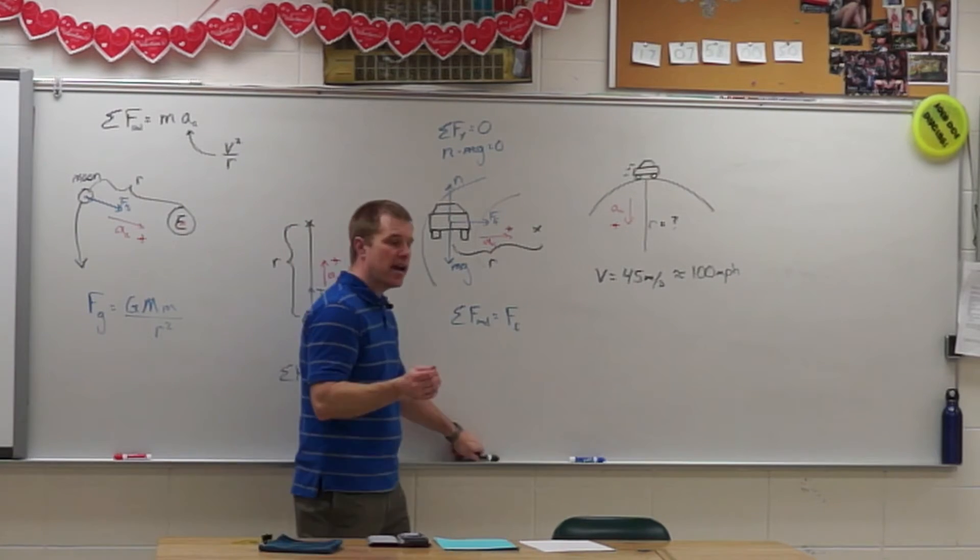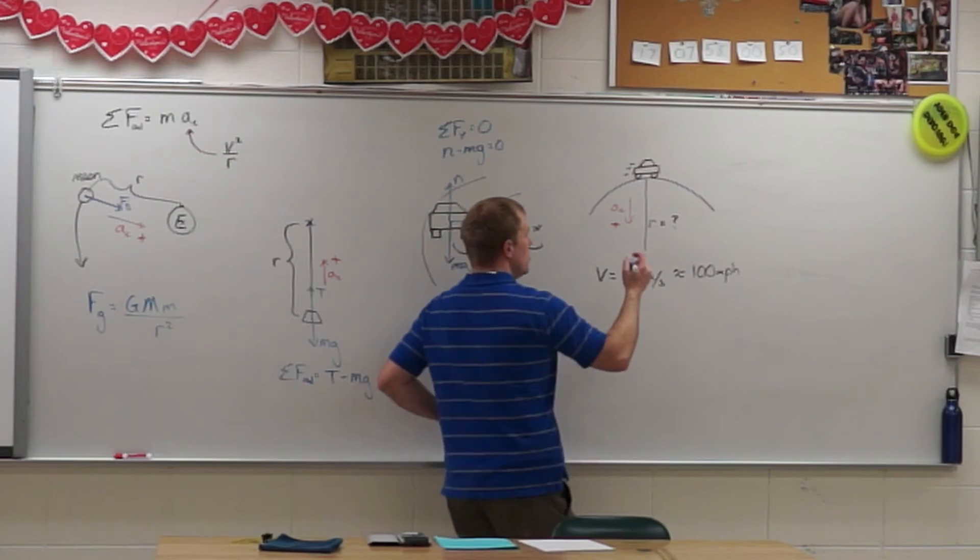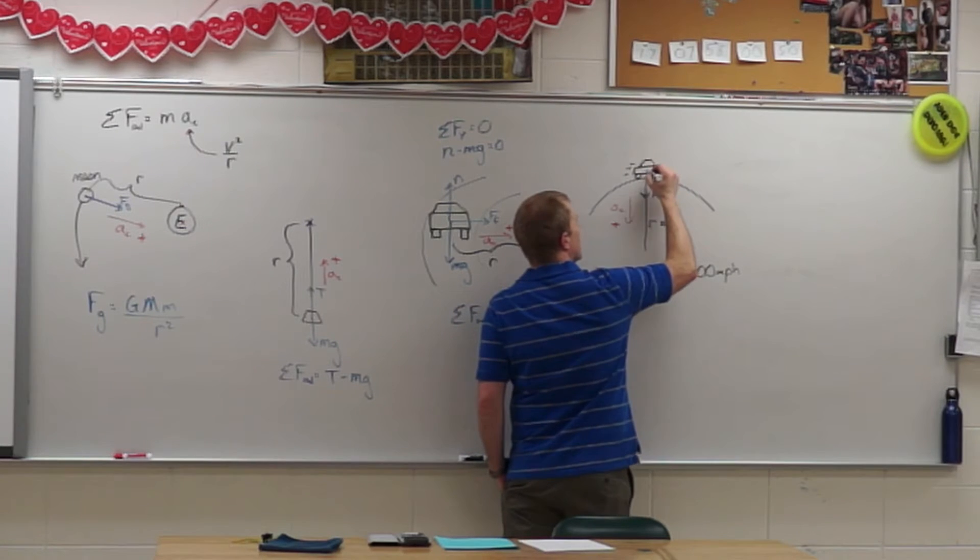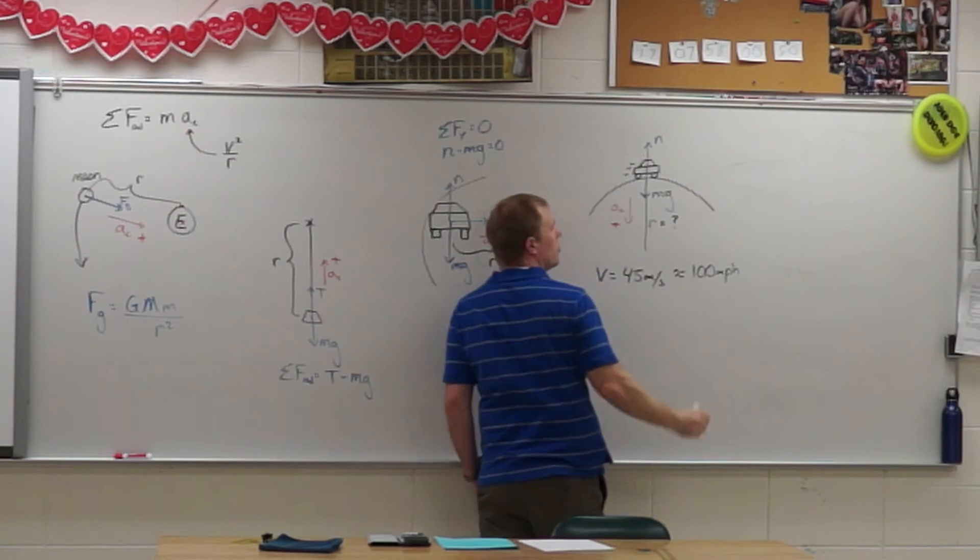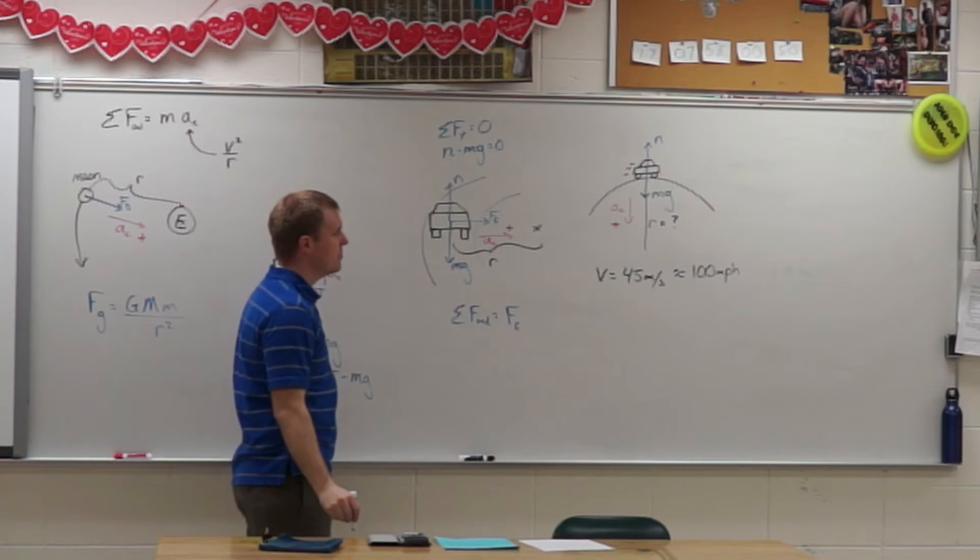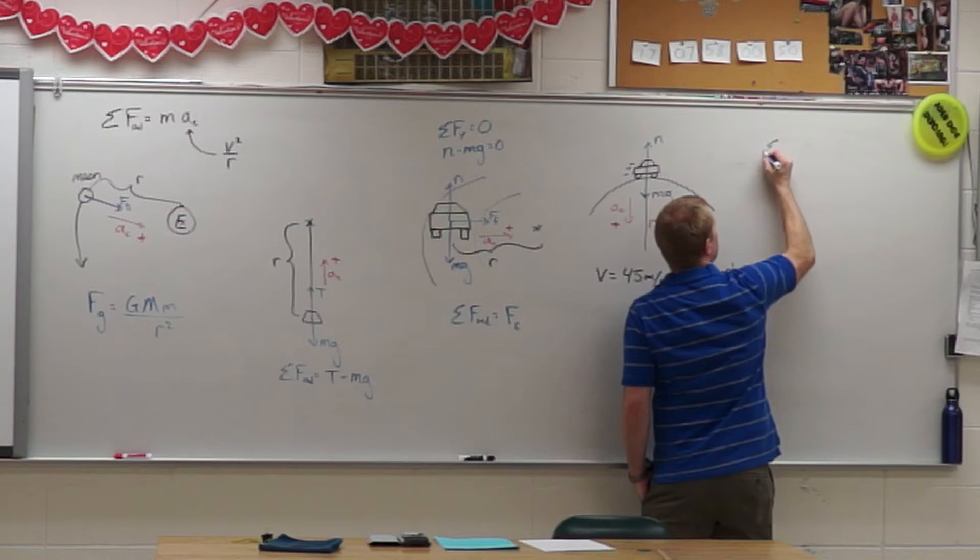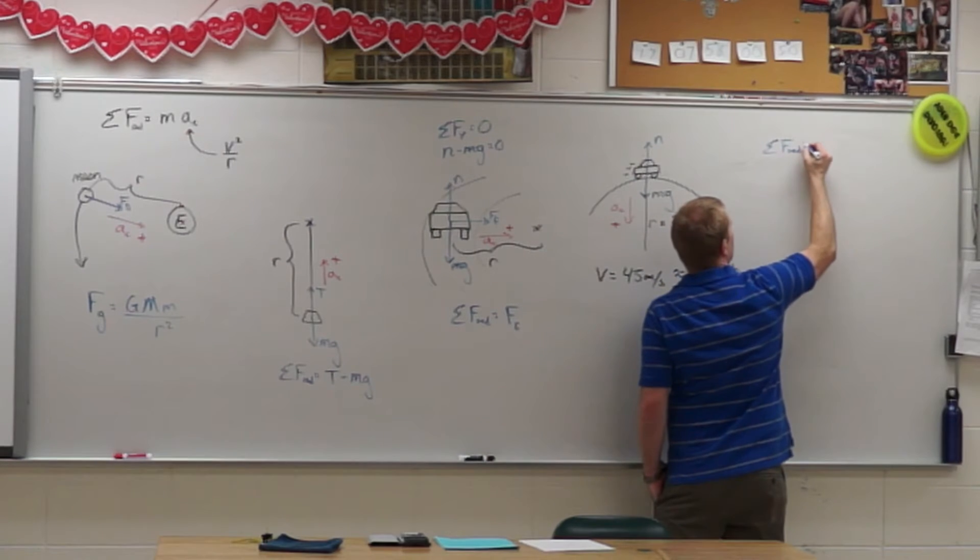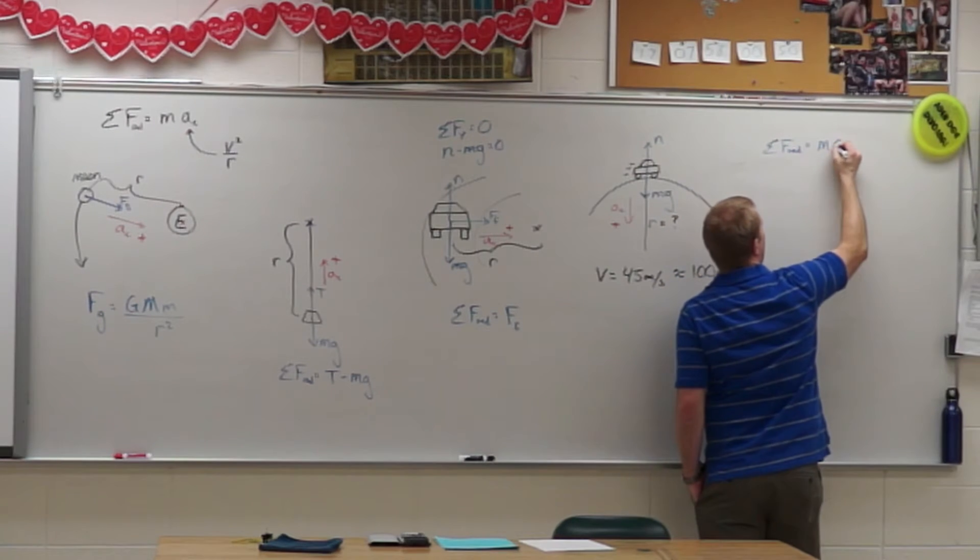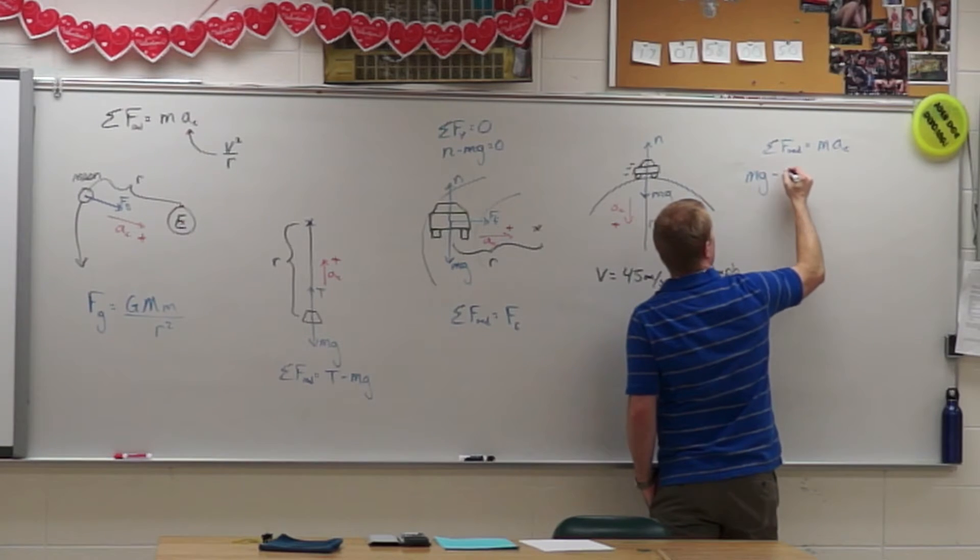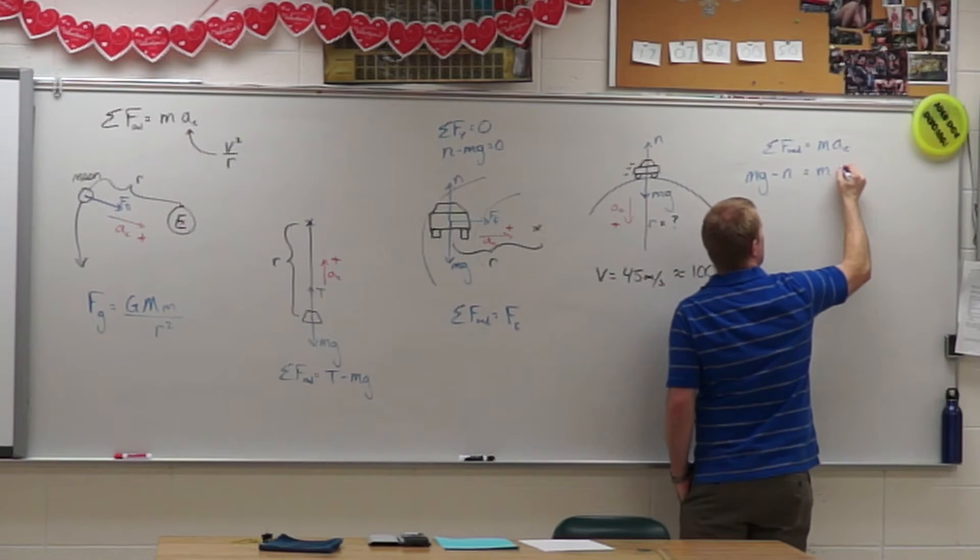So let's set up our problem. What forces are acting on here? I have Mg and I have a normal force because it's on that surface. I've defined down as my positive direction. So I sum up the forces in the radial direction set equal to mAc. I have Mg pointing in my positive direction minus the normal force equals mAc.